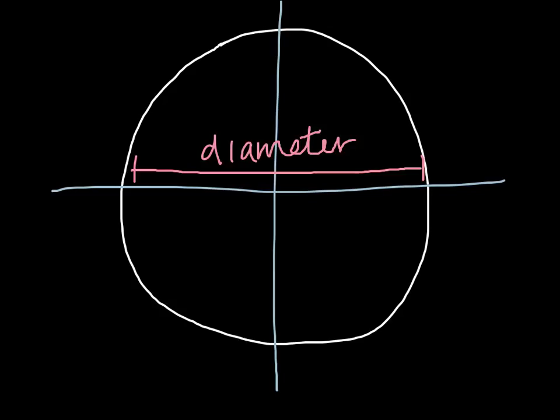The next thing that we need to know is a radius. The radius is half of the amount of the diameter, also known as d equals r times 2.